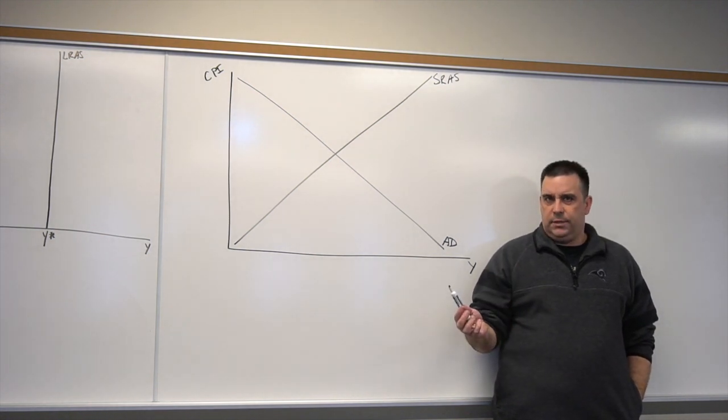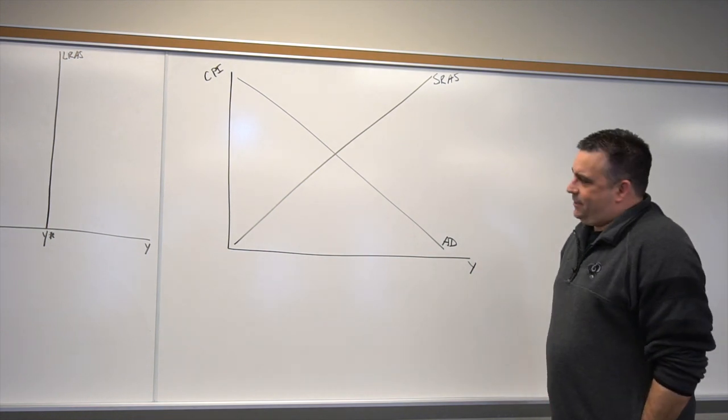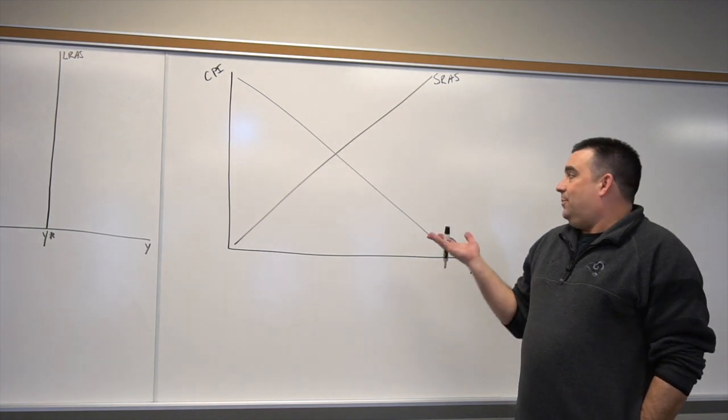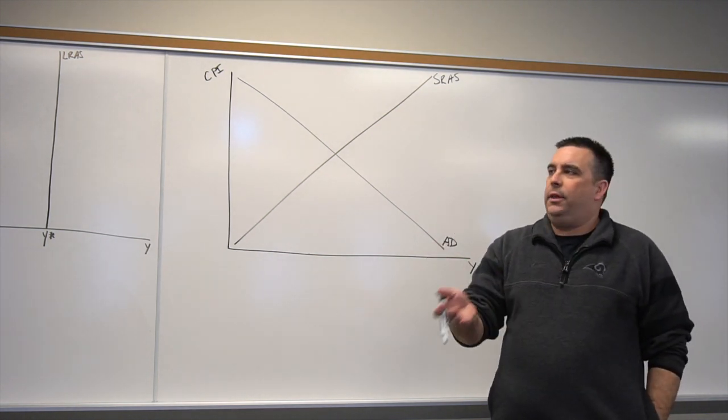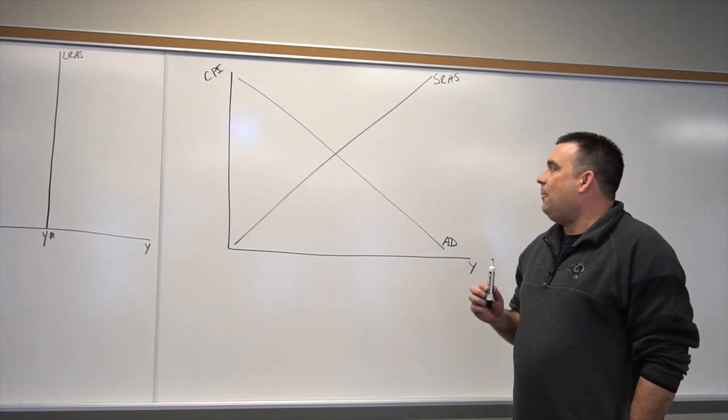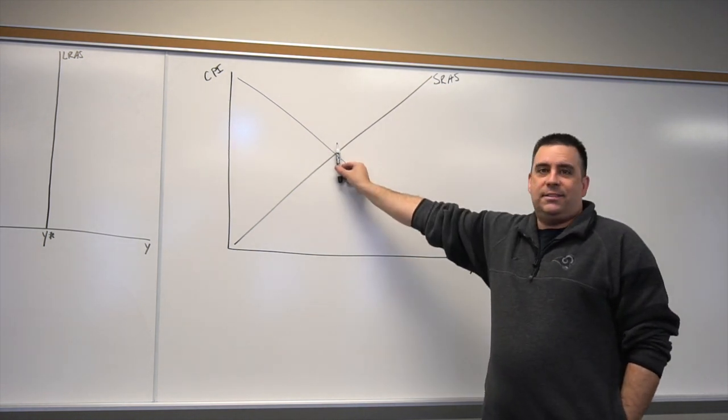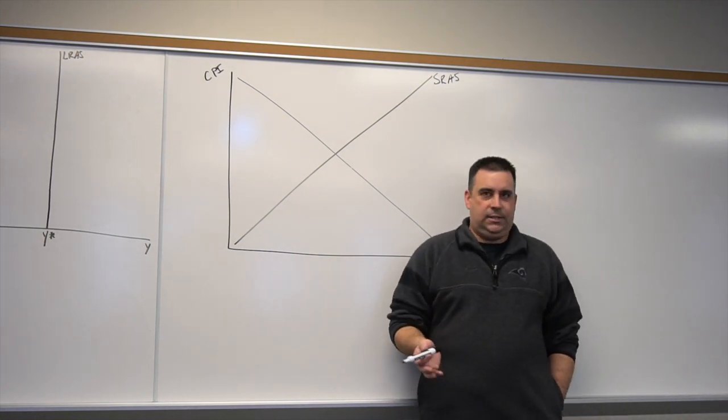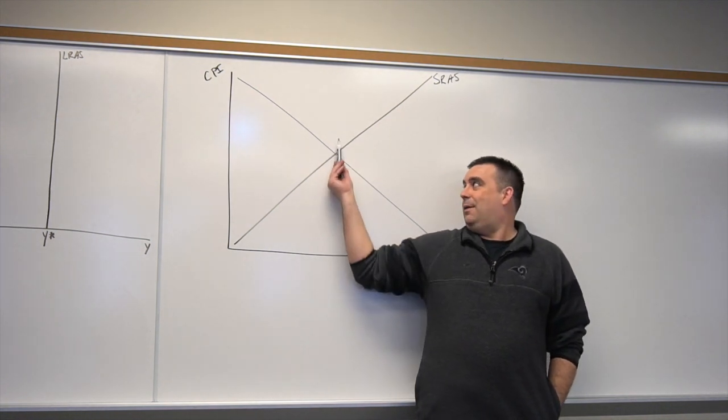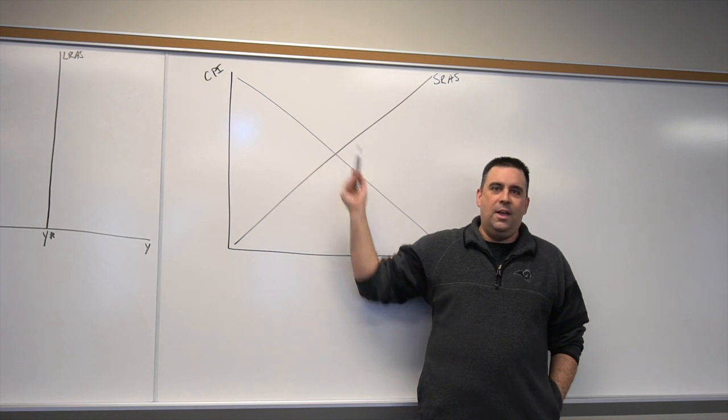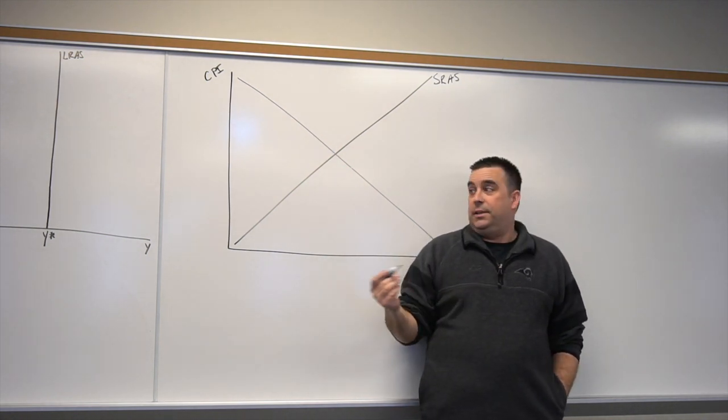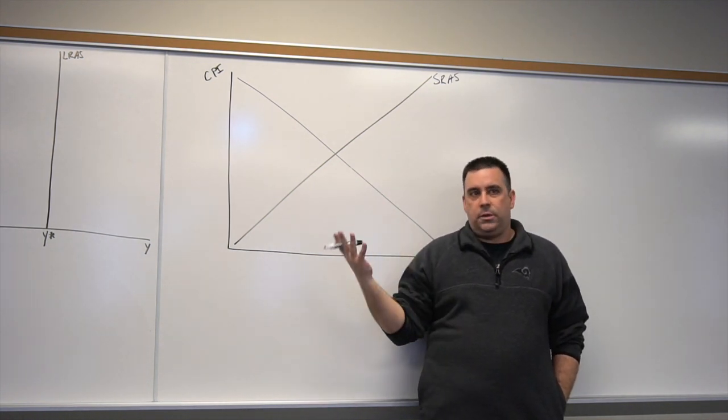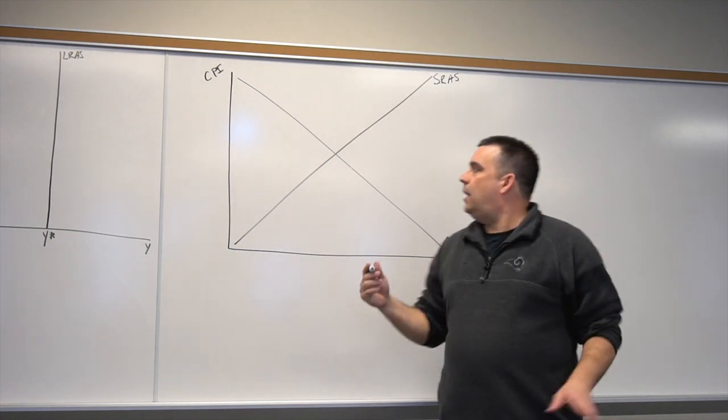Where is it going to go into this model? Usually I ask the class, where do you guys want long-run aggregate supply to go? Everyone thinks it should go right here in the middle of the X. I always say, okay, that's great, why do we want it right there? Usually I get silence—it would make it a lot prettier, it would look like a star. It doesn't seem like we have a good answer other than it seems like it should go in the middle of the X. But your intuition is actually correct—it does go in the middle of the X. The question becomes why.